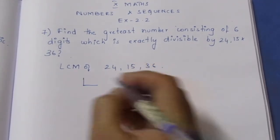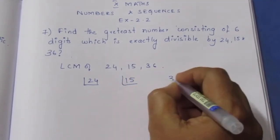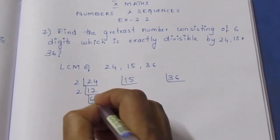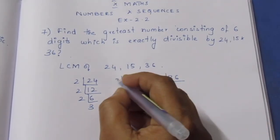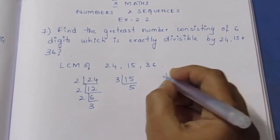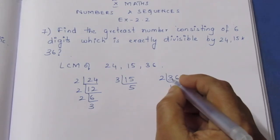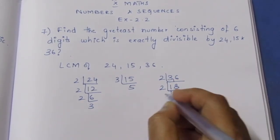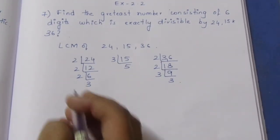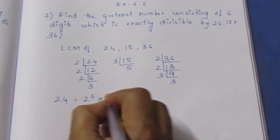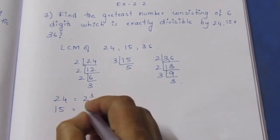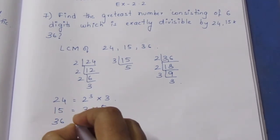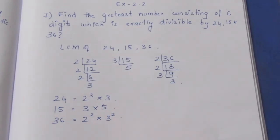Finding the prime factorization: 24 = 2 cubed into 3. 15 = 3 into 5. 36 = 2 squared into 3 squared. Now we calculate the LCM using these prime factors.